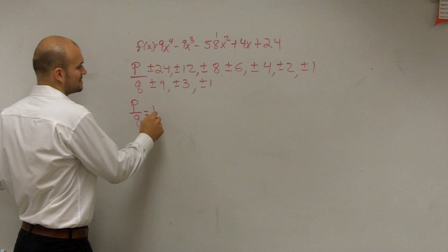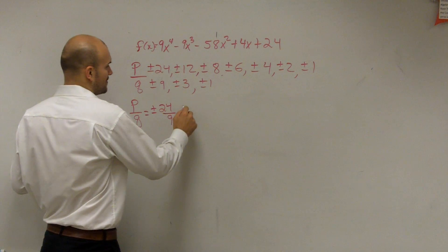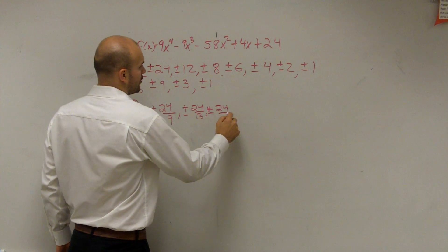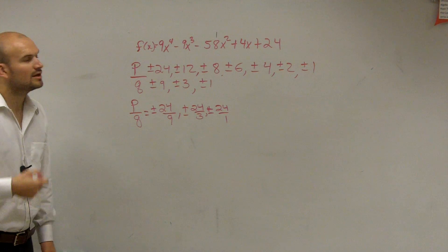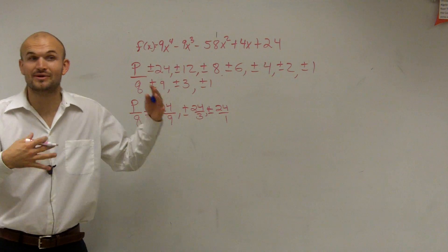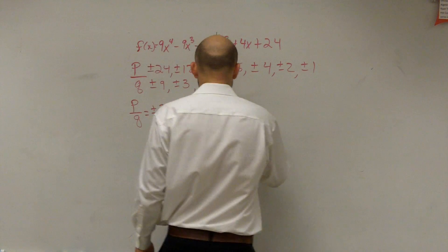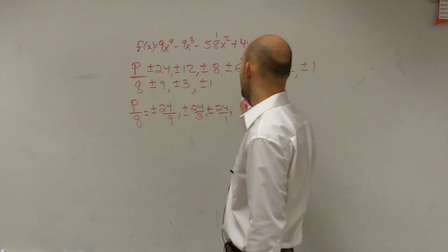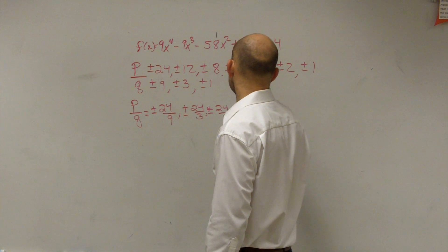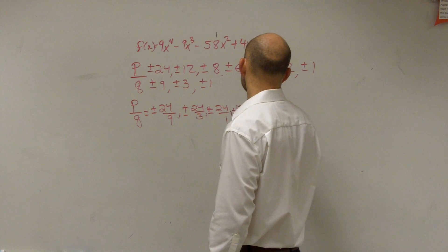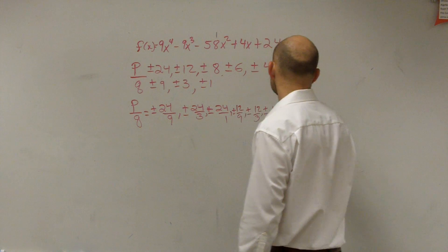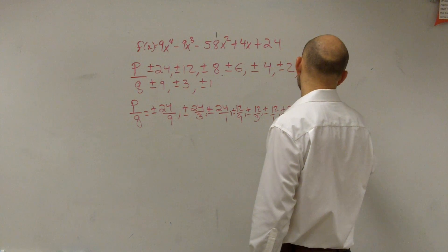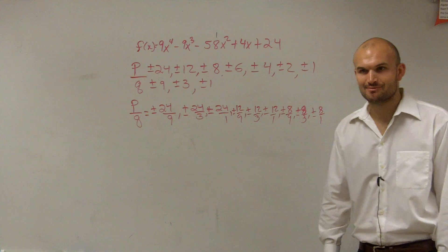So p over q is plus or minus 24 over 9, plus or minus 24 over 3, plus or minus 24 over 1. I'm going to write them all out, and then you'll see you don't need to write them all out — you can cut some out once you see duplicates, because you don't need to write in duplicates. So then I have plus or minus 12 over 9, plus or minus 12 over 3, plus or minus 12 over 1, plus or minus 8 over 9, plus or minus 8 over 3, plus or minus 8 over 1.